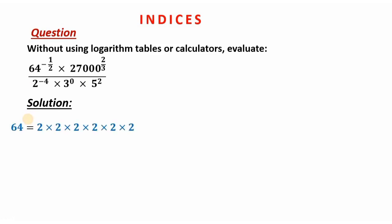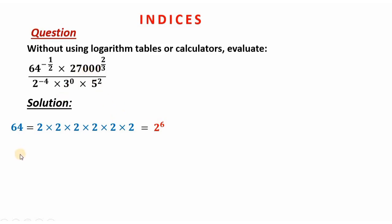For 64, we have 2 multiplied by itself 6 times, so that gives us 2 to the power 6. For 27,000, we get 3 raised to power 3 times 10 raised to power 3. On the denominator we already have the values expressed in terms of prime factors — that is 2, 3, and 5 — so the denominator is not a big deal.